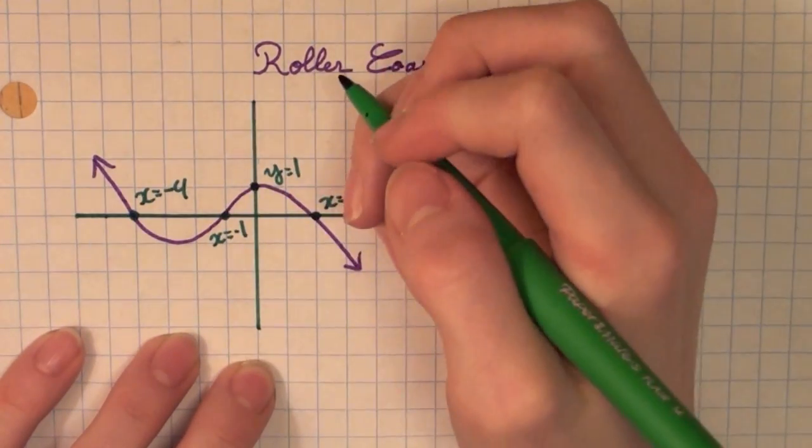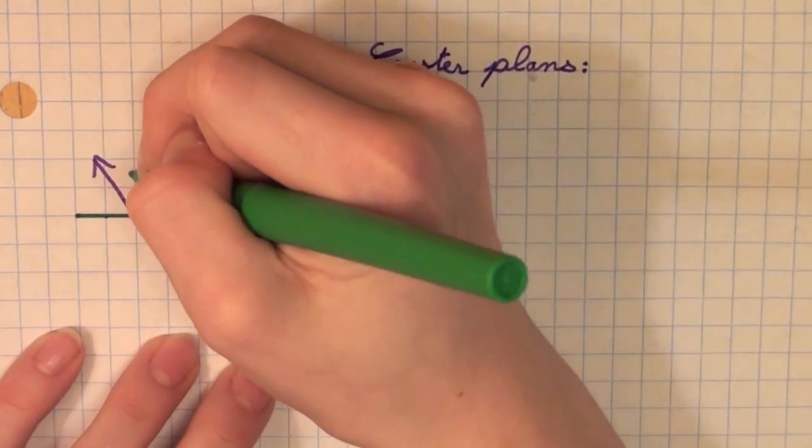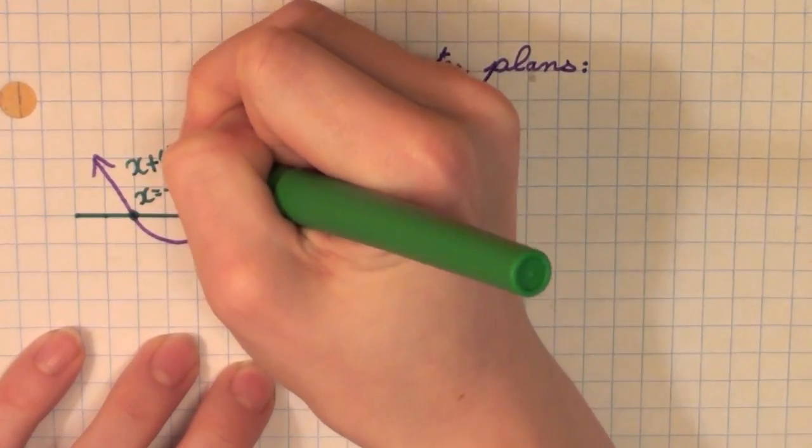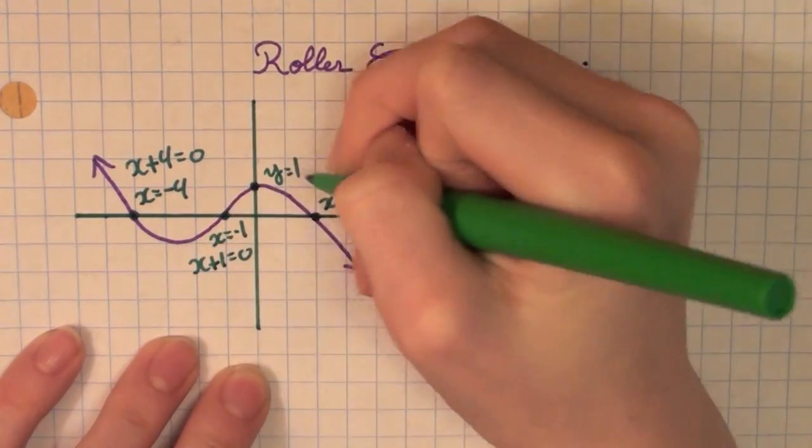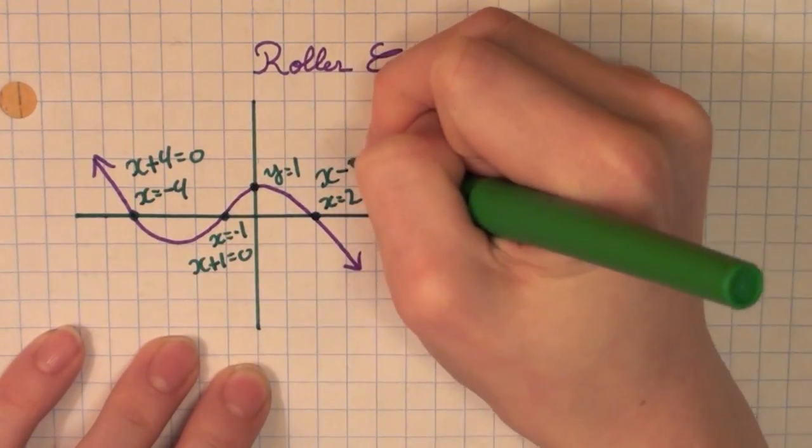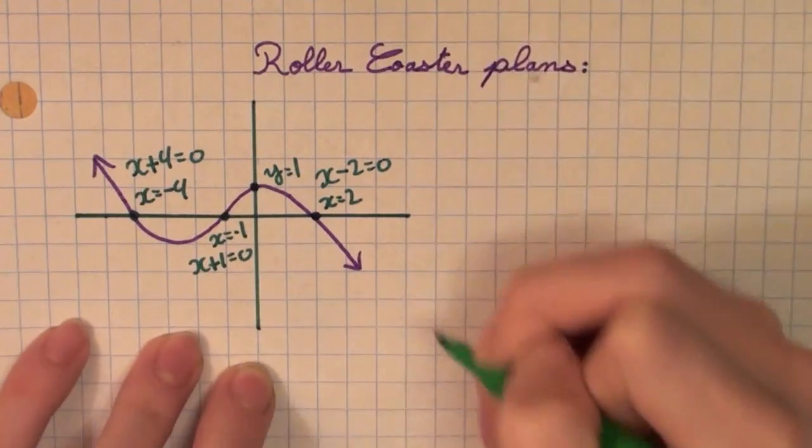These can also be thought of as little equations, where X plus 4 equals 0, X plus 1 equals 0, X minus 2 equals 0. Cool.